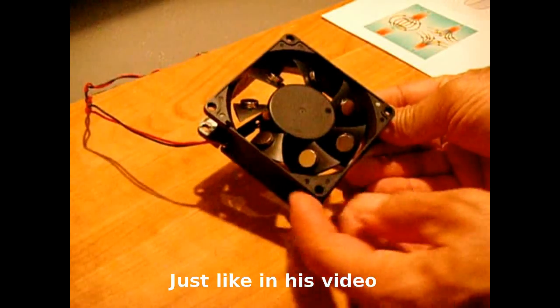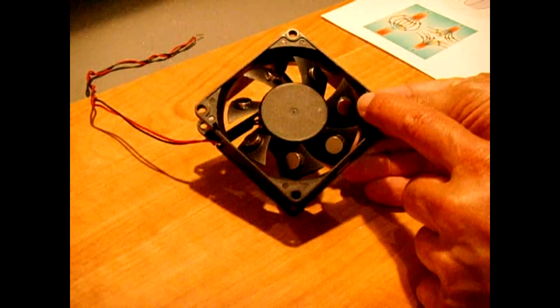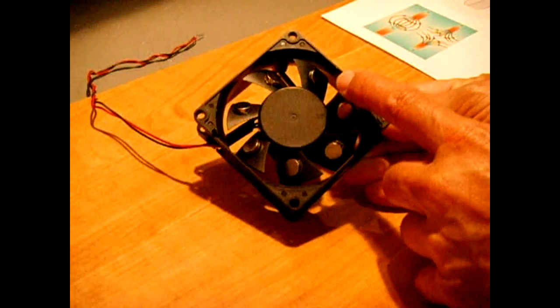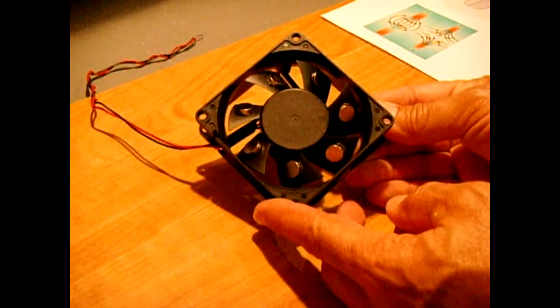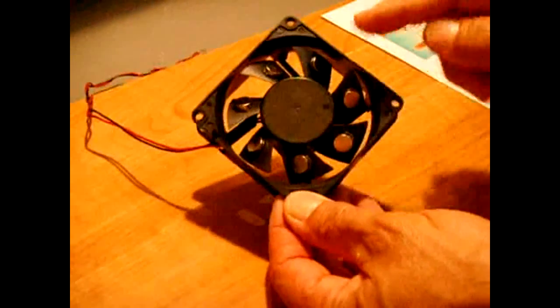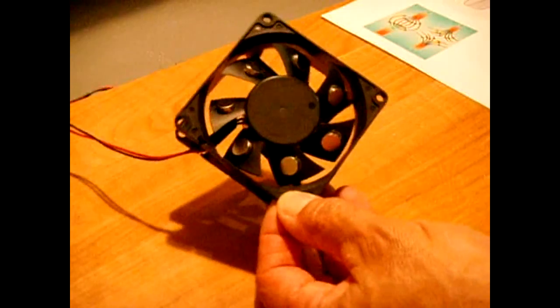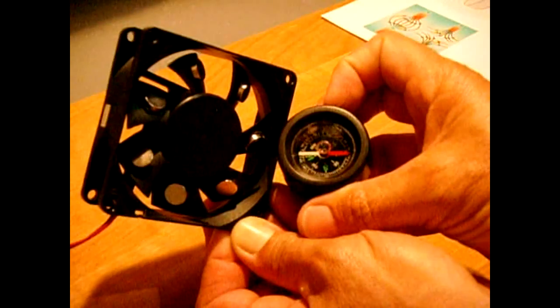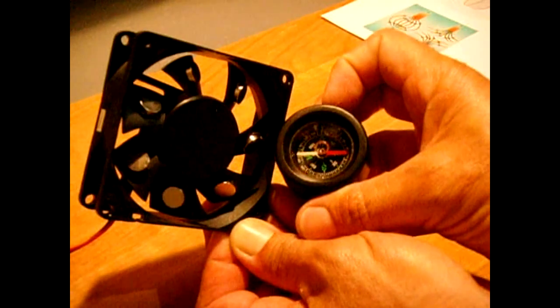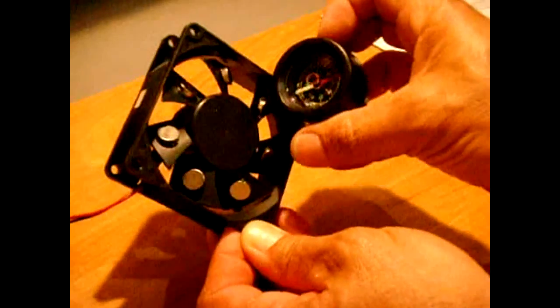Now the only difference is that my magnets are slightly thicker and his were slightly thinner. The positioning is all the same and every single one of these magnets points in the same direction. Now in my case they all point to magnetic south, every single one of them.